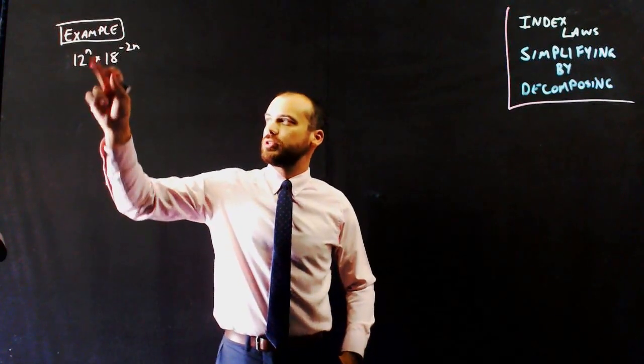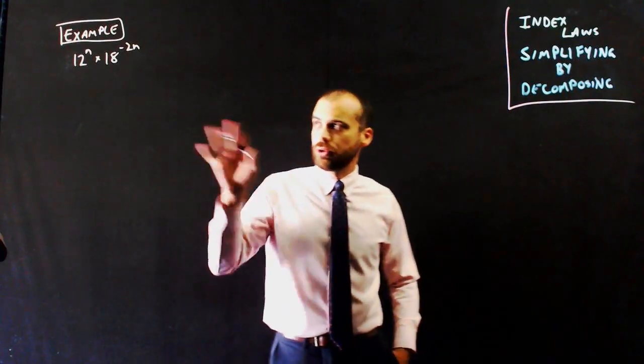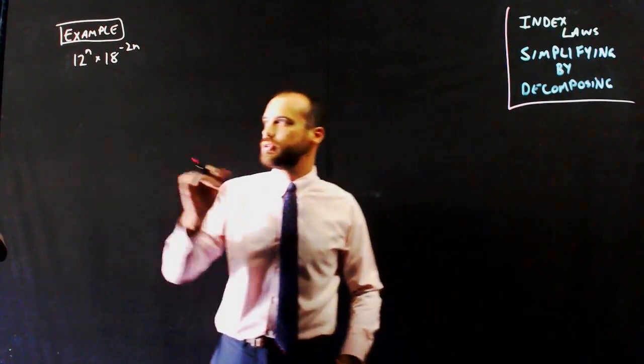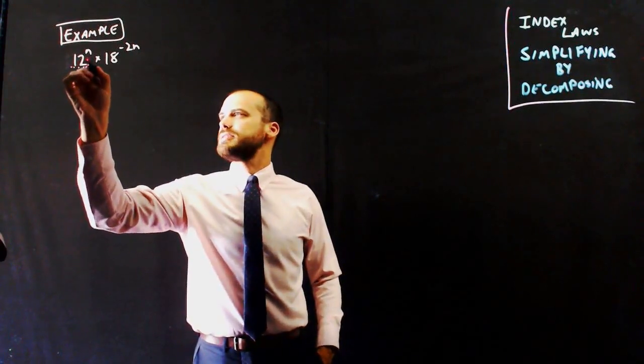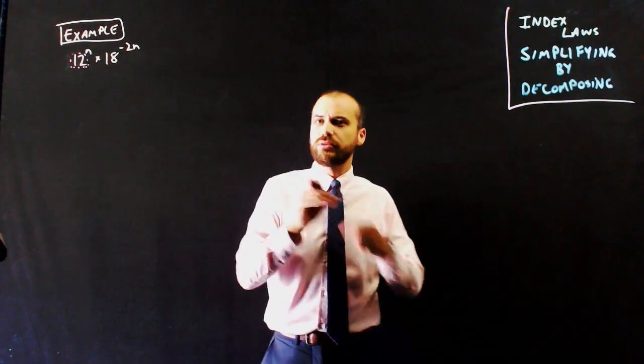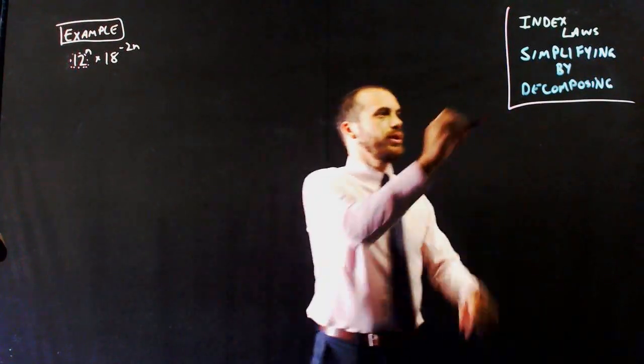Here's my example: 12 to the power of n times 18 to the negative 2n. If you look at it, you should immediately say that can't be done because the bases are different.